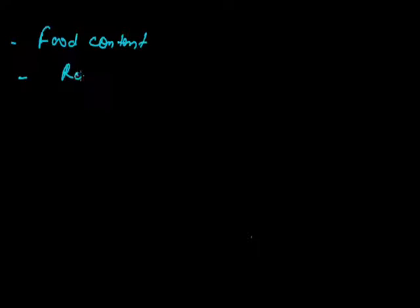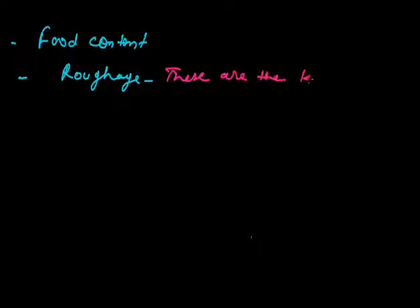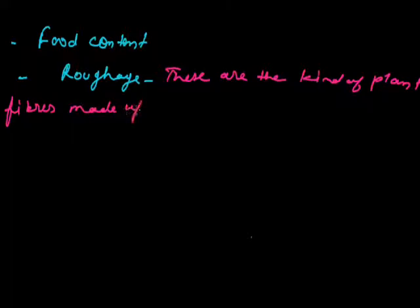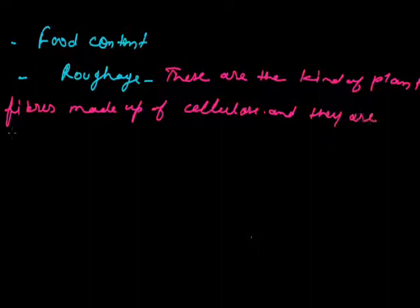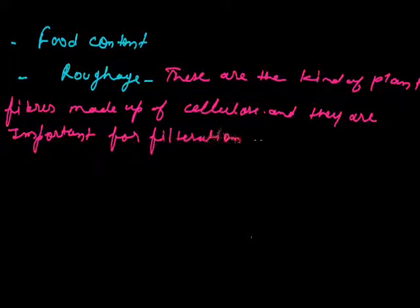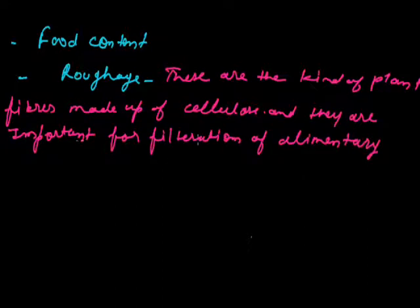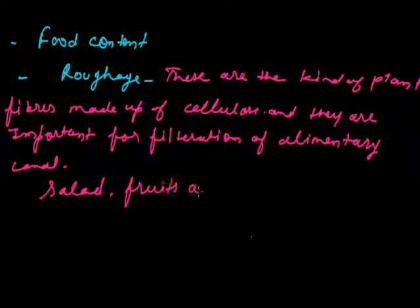Today we will start the importance of other kinds of nutrients in food content. Today we will deal about the importance of roughage inside the body. Basically roughages are kind of plant fibers made up of cellulose, and they are important for filtration of alimentary canal. We should take fibers in our regular diet. Fiber sources are salad and oats.